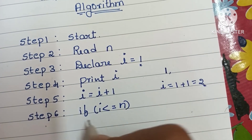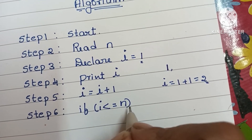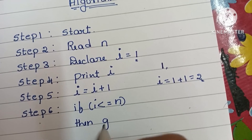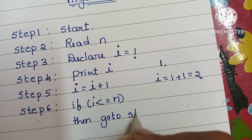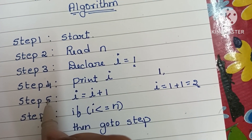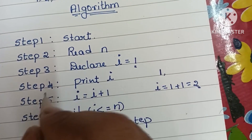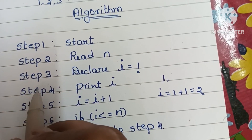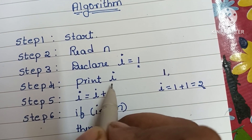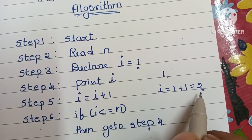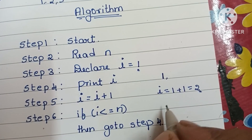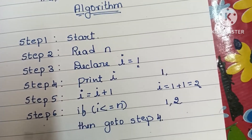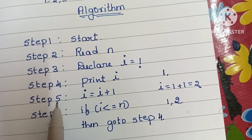If i value is less than or equal to N, we go back to step four and print the value of i again. The value of i has changed — it is now 2. So here we are printing 1, then 2.